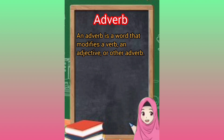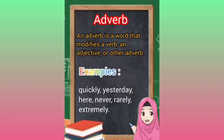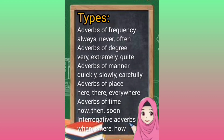An adverb is a word that modifies a verb, an adjective, or another adverb. Examples: quickly, yesterday, here, never, rarely, extremely. Types — adverbs of frequency: always, never, often; adverbs of degree: very, extremely, quite; adverbs of manner: quickly, slowly, carefully.